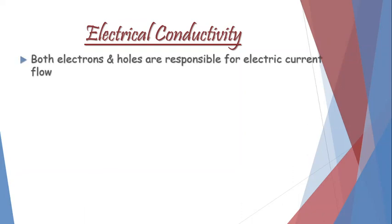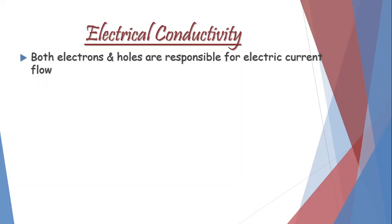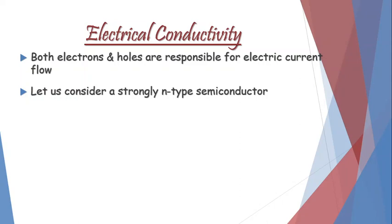In semiconductors, we know that both electrons as well as holes are responsible for electrical current flow. In order to derive the equation for electrical conductivity, let us consider a strongly N-type semiconductor — that is, a sample with only one type of carrier, which is the electron.